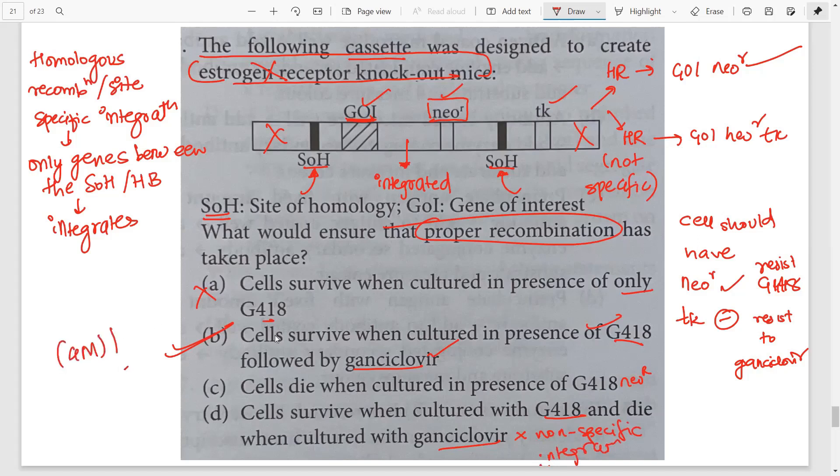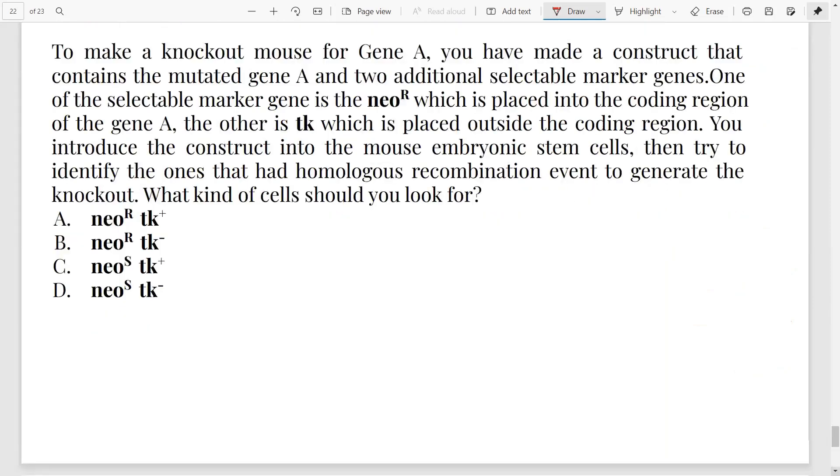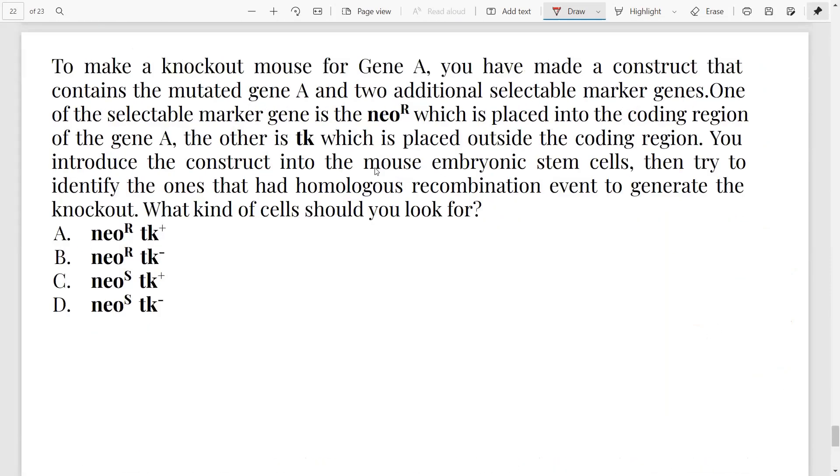Let's move on to our next question. It says to make a knockout mouse for gene A. You have the gene A and you have to make a knockout. You have made a construct that consists of the mutated gene A. So let's write gene A is mutated and two additional markers. One is for the neo-R which is placed into the coding region of gene A. Very important. So neo-R is placed in the coding region. So basically what they mean is the homologous regions are surrounding both the neomycin resistance gene as well as the mutated gene. That's the coding part.